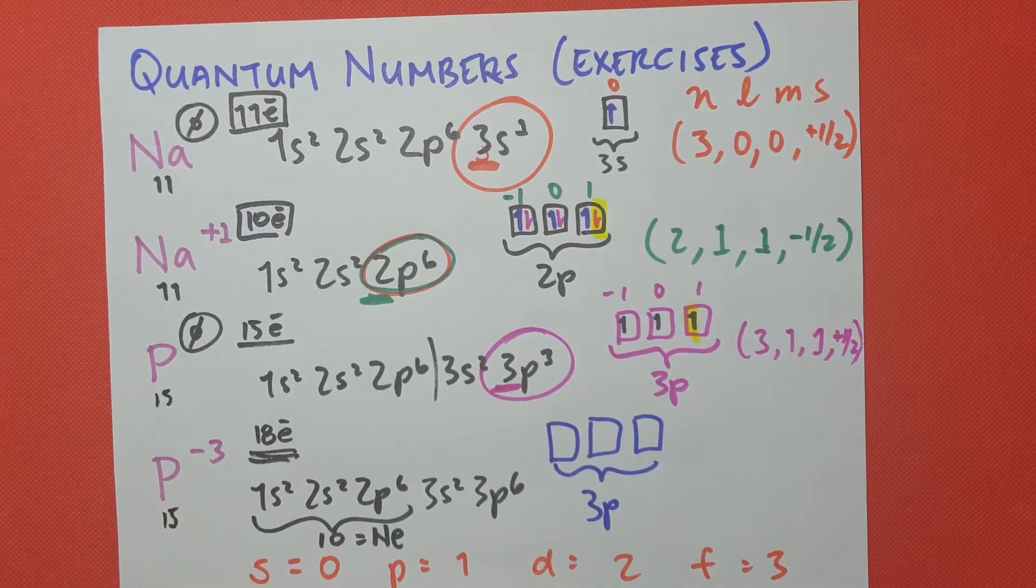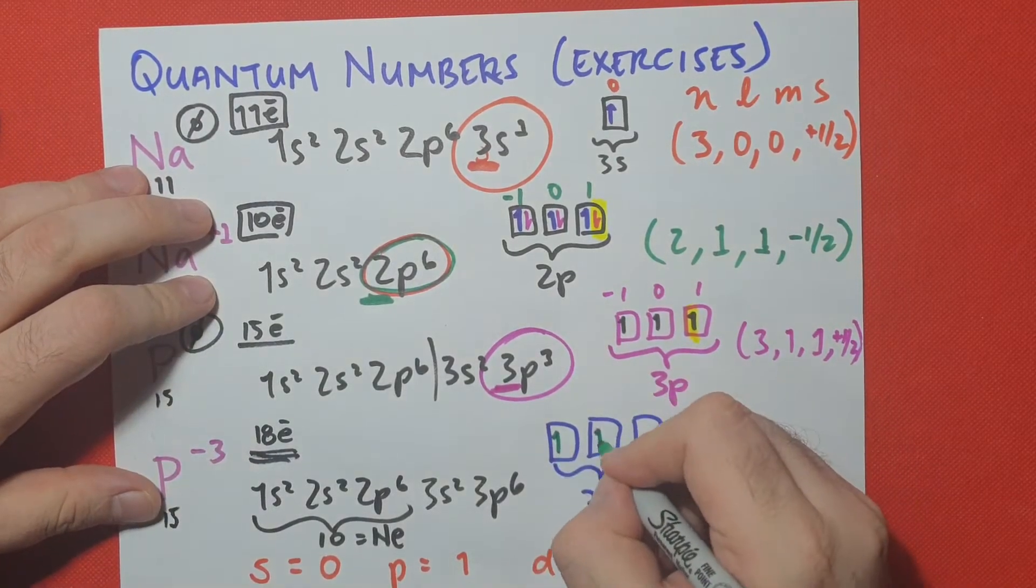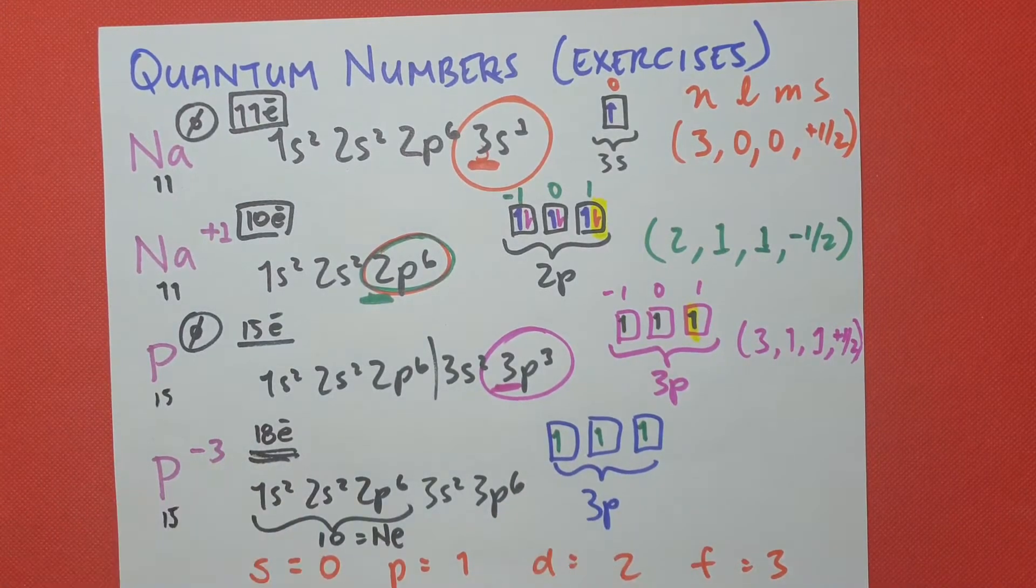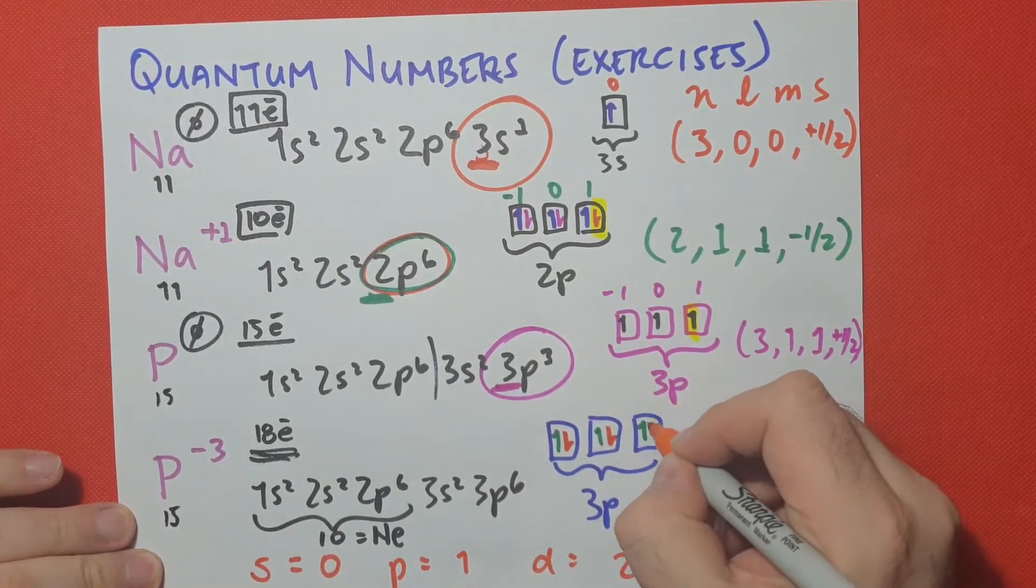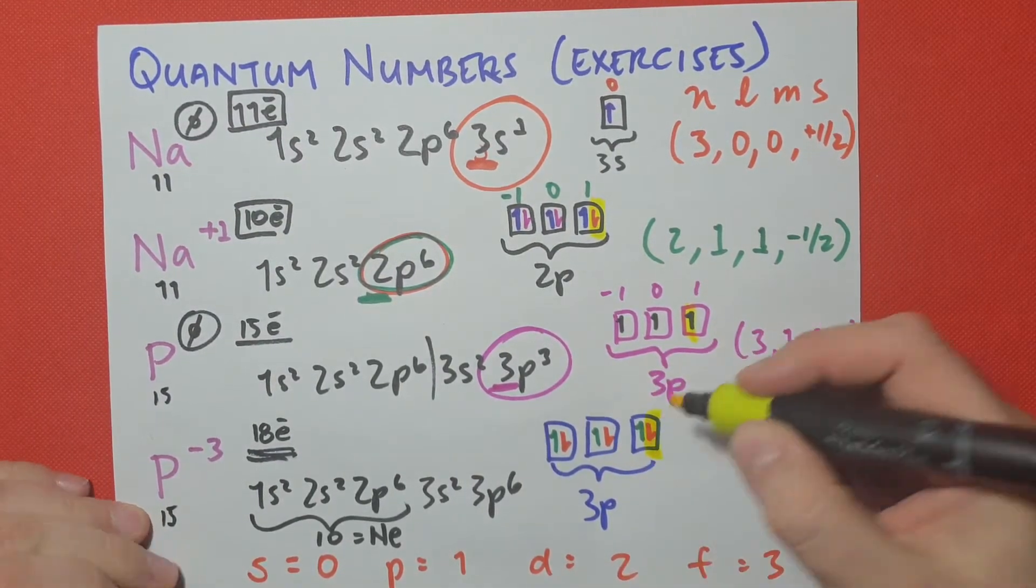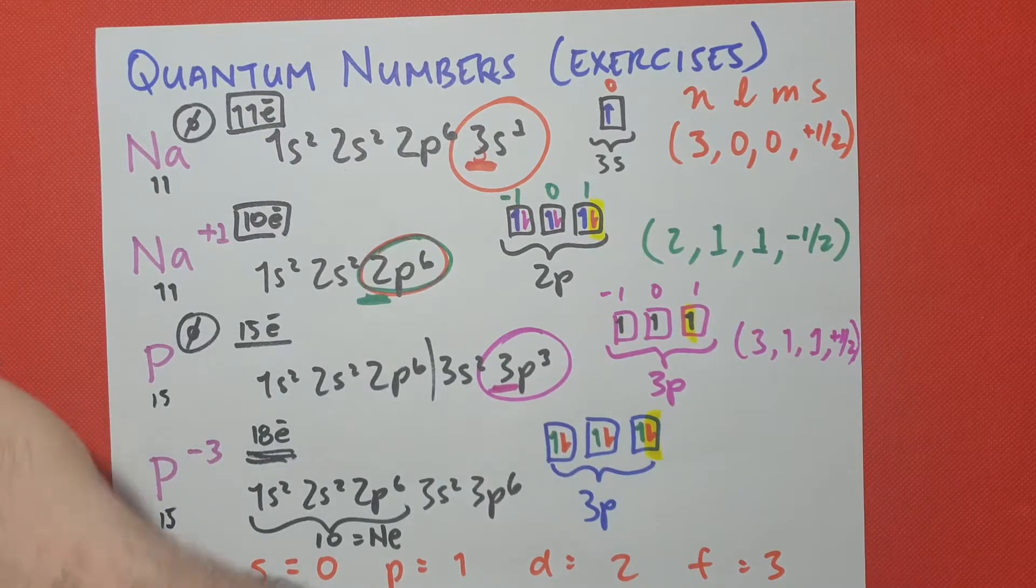And then we draw our up spins. 1, 2, 3. We're still missing another 3 to complete these 6. And we're going to go 4, 5, and 6. The last electron that we filled is this one. This is the one we're going to focus on.